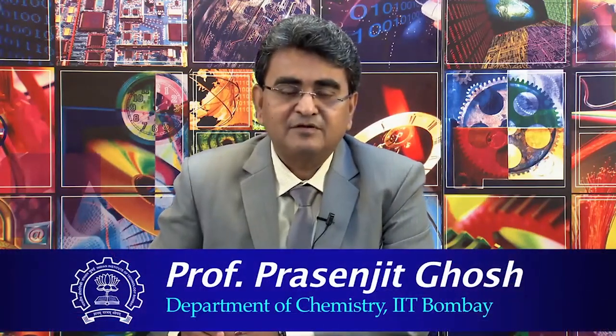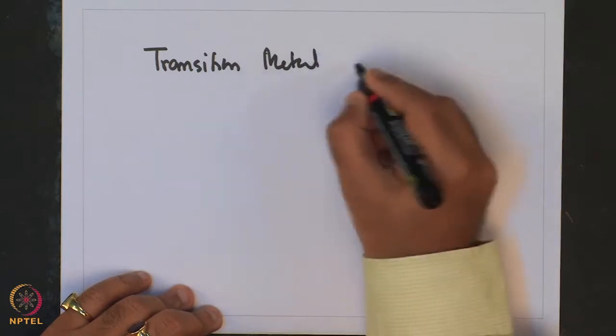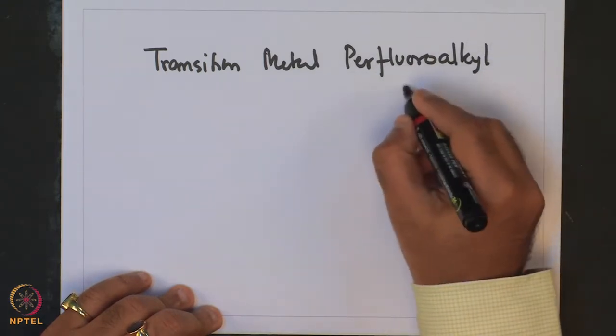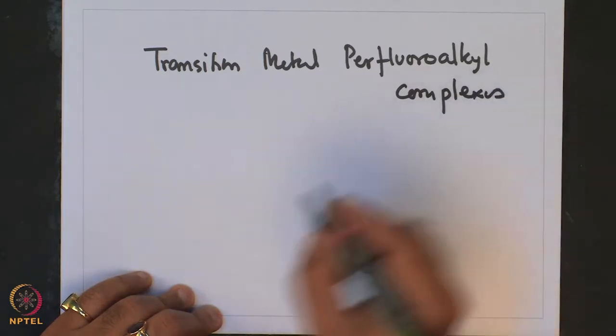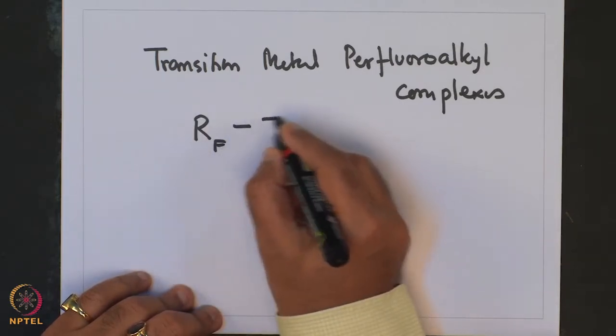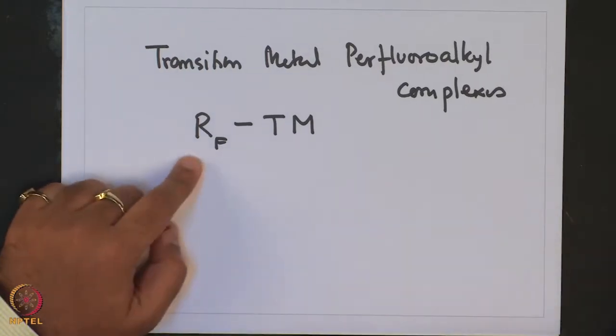Welcome to this lecture on Transition Metal Organometallic Chemistry from Principles to Applications. We have been discussing an interesting type of organometallic compounds called Transition Metal Perfluoroalkyl Complexes. These are often designated as RF Transition Metal type compounds, where RF represents the perfluoroalkyl moiety.